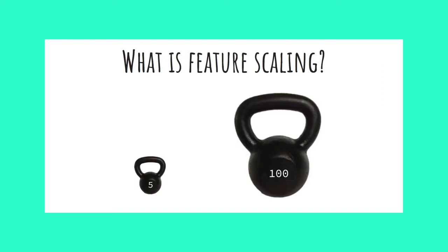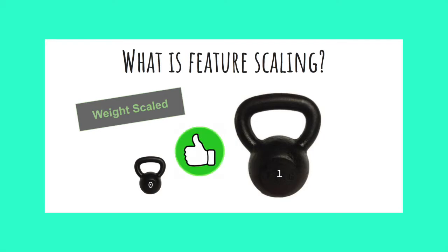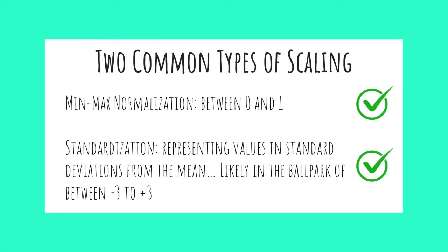If we have features such as the weight of a kettlebell, maybe that weight could take on values between five pounds and a hundred pounds. However, instead of representing the weight in pounds, we may choose to represent those values between zero and one, where zero is the lowest possible weight and one is the highest possible weight.